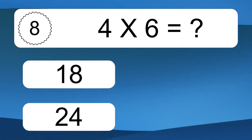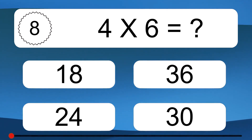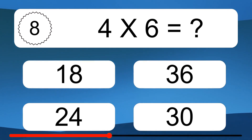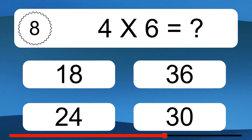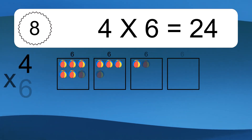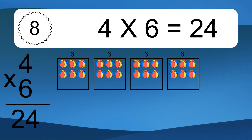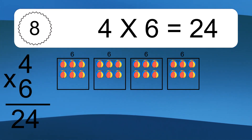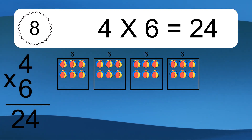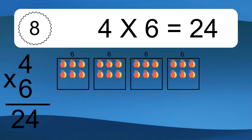4 times 6 equals what? 4 times 6 equals 24. We have 4 boxes, and each box has 6 colorful balls inside. If you count all the balls in all the boxes together, you will have 4 times 6 balls. This equals 24 balls.